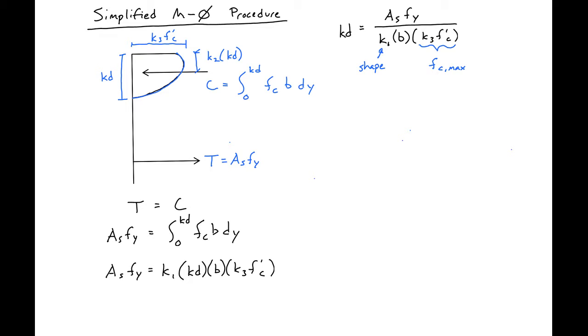We can then substitute this expression for Kd into our moment expression. We'll find that our moment equals As times Fy times the lever arm, which in this case is D minus K2 times Kd.